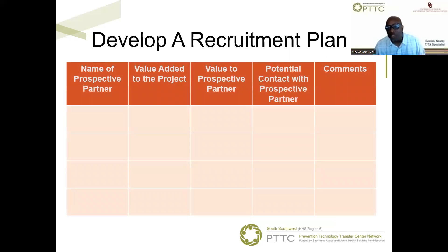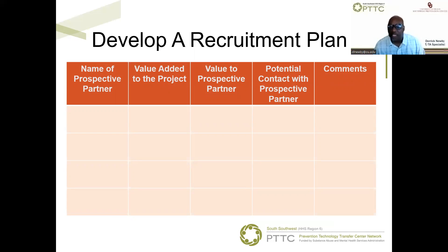Exploring each sector when recruiting coalition members will help bring attention to your efforts. You can even ask the people you recruit to recommend other people. Aren't you more likely to accept an invitation from someone you know? I asked you to create a list because one needs to track their recruitment efforts. Even if some of the people you talk to are not available initially, things change and opportunities arise. This chart will help you take your recruitment effort to the next level. It allows you to explain what's in it for them by asking you to think about the value of being a part of the coalition to the prospective partner.